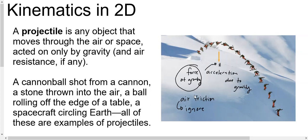Projectile motion is any object that moves through the air or space acted upon only by gravity. If we were to consider air resistance, that might change the way the object moves, though it would still follow a curved path. Examples include a baseball thrown, a cannonball shot from a cannon, and any object thrown in air that follows a curved path.